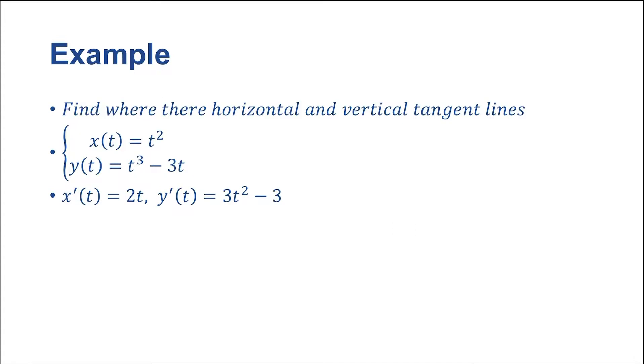so now we can plug this directly into our formula for dy dx. So dy dx is equal to y prime over x prime. So we get dy dx is equal to 3t squared minus 3 over 2t. Right,